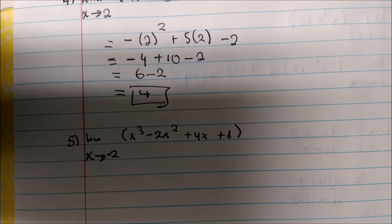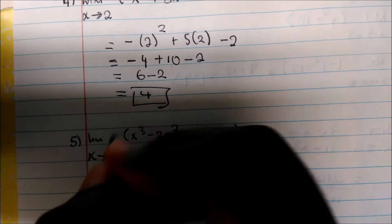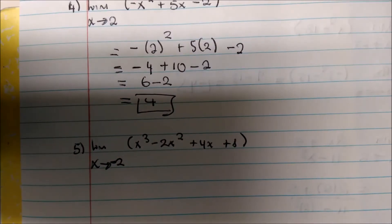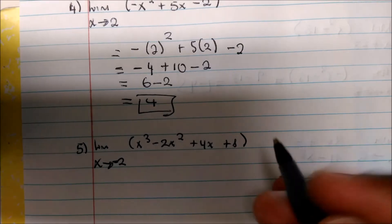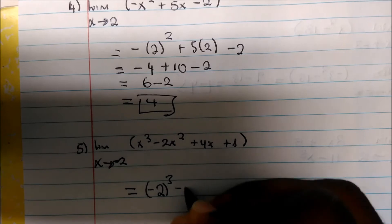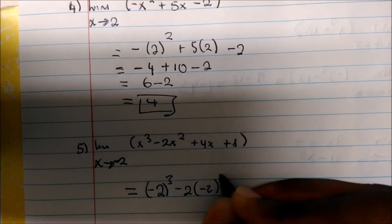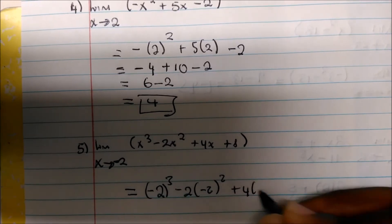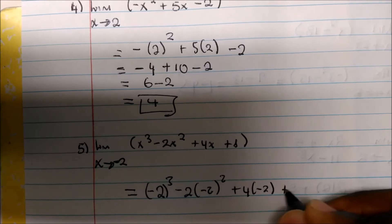Let's look at the last one. The cubic function. And this is negative 2. So the limit as x approaches negative 2 of the function, x cubed minus 2x squared plus 4x plus 8. Again, we just plug in. So negative 2 cubed minus 2 times negative 2 squared plus 4 times negative 2 plus 8.